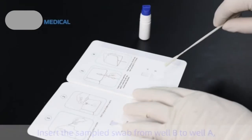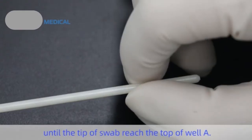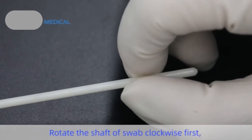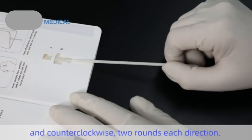Step 4: Insert the sampled swab from well B to well A until the tip of swab reaches the top of well A. Rotate the shaft of swab clockwise first and counterclockwise, 2 rounds each direction.